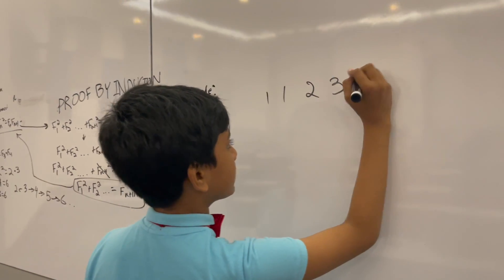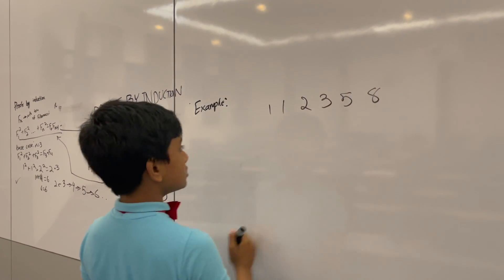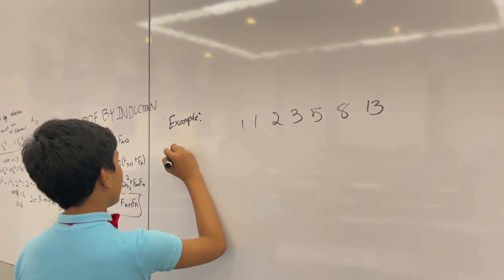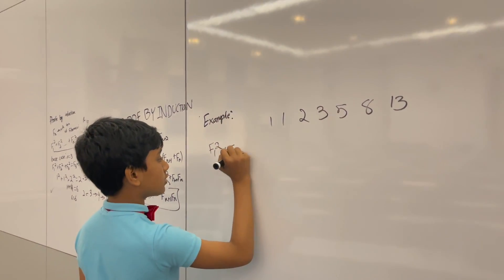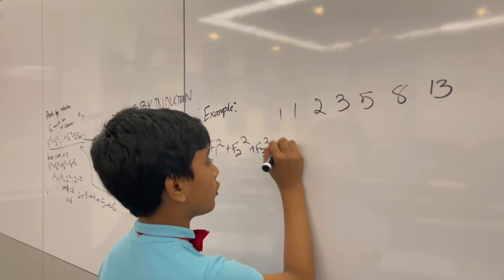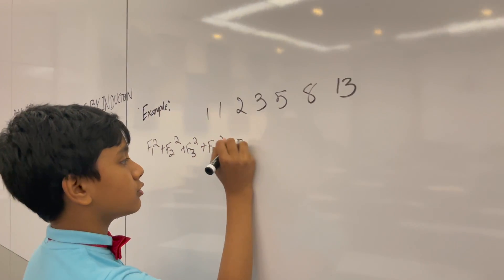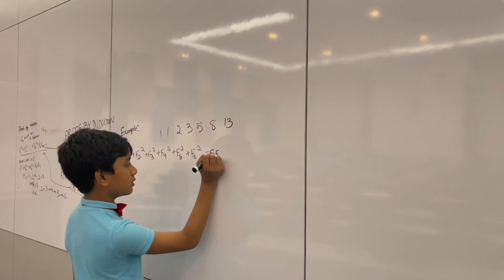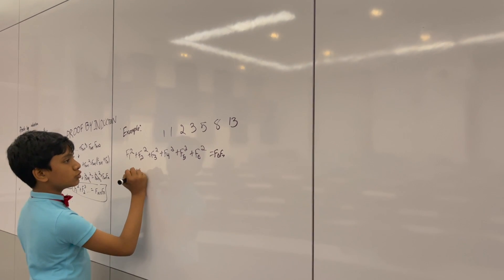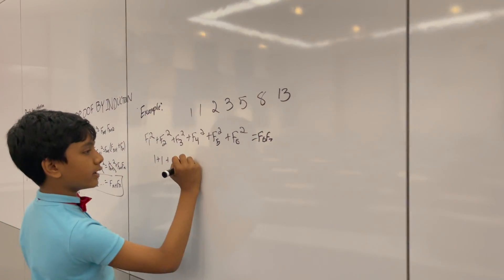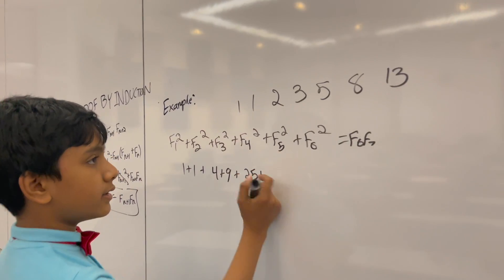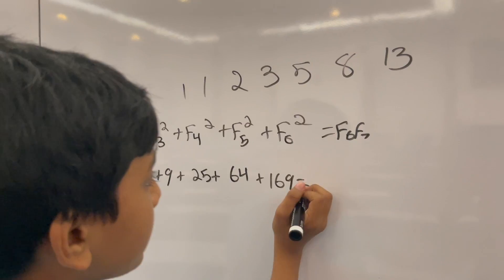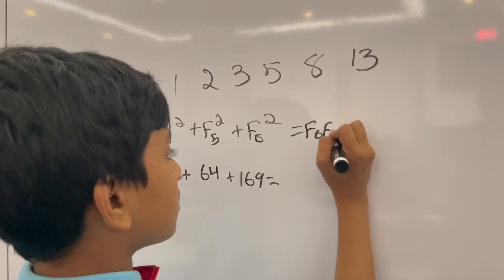Let's prove that F1 squared plus F2 squared plus F3 squared plus F4 squared plus F5 squared plus F6 squared equals F6 times F7. It's 1 plus 1 plus F4 squared is 4, 3 squared is 9, 5 squared is 25, 8 squared is 64, 13 squared is 169, equals 13.